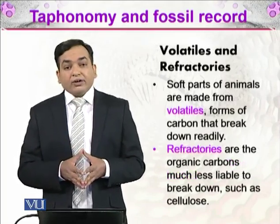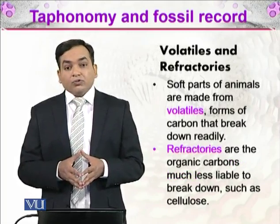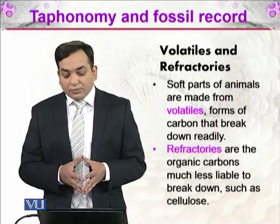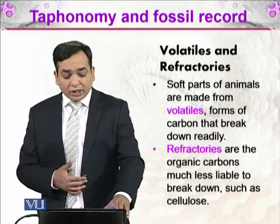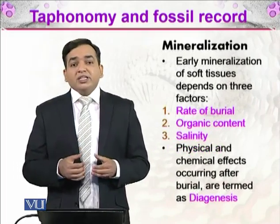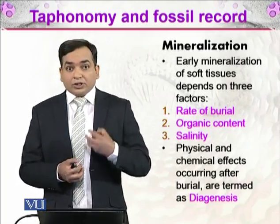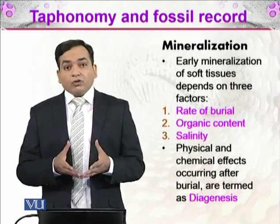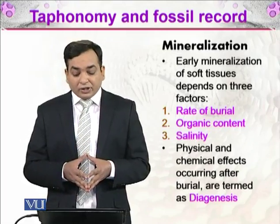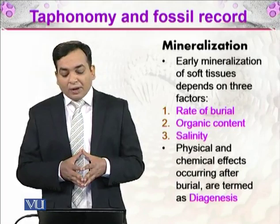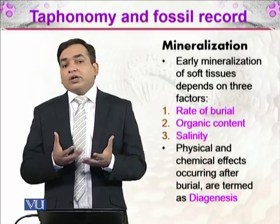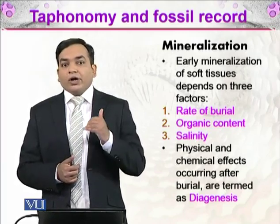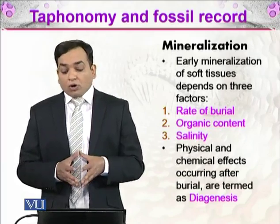There are also volatiles and refractories. Soft parts of animals are made from volatiles — forms of carbon that break down easily. Refractories are the hard parts, such as bones or cellulose in the case of plants. Mineralization, as the name indicates, is when minerals deposit into the remains, and it depends on the rate of burial, organic content, and salinity. The physical and chemical effects that occur when an organism dies are called diagenesis.